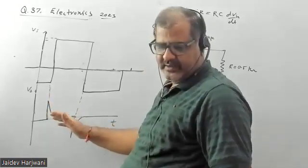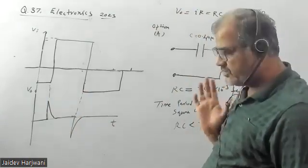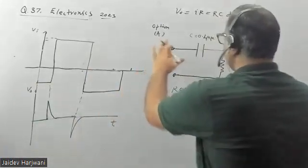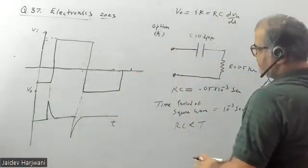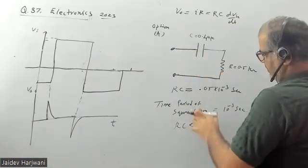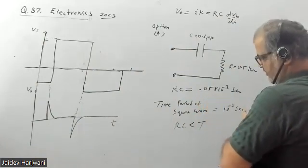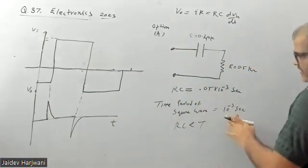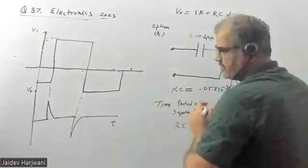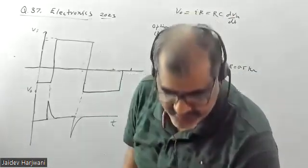From the given options, option A satisfies the characteristic. This is basically a differential circuit and RC for this circuit is equal to 0.05 milliseconds, which is less than the time period of the signal. So option A is the correct answer for this question. Thank you very much.